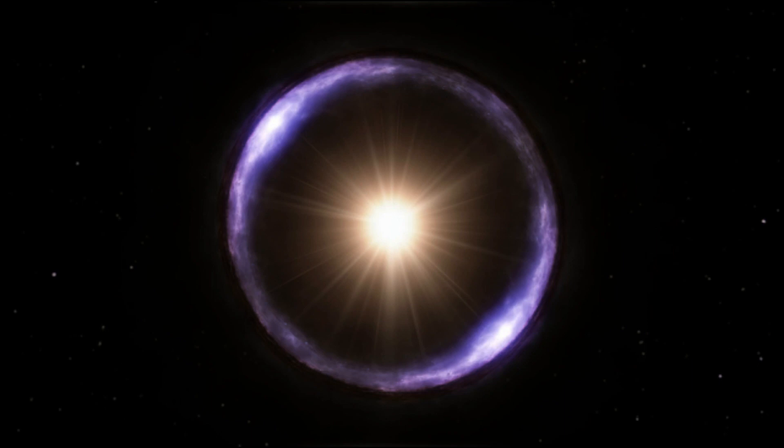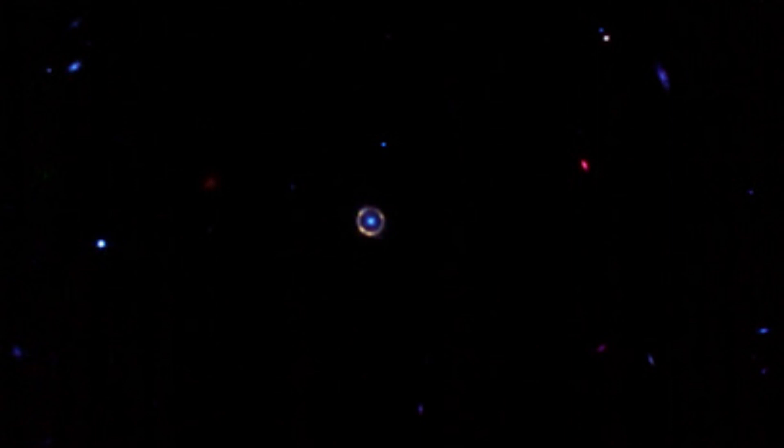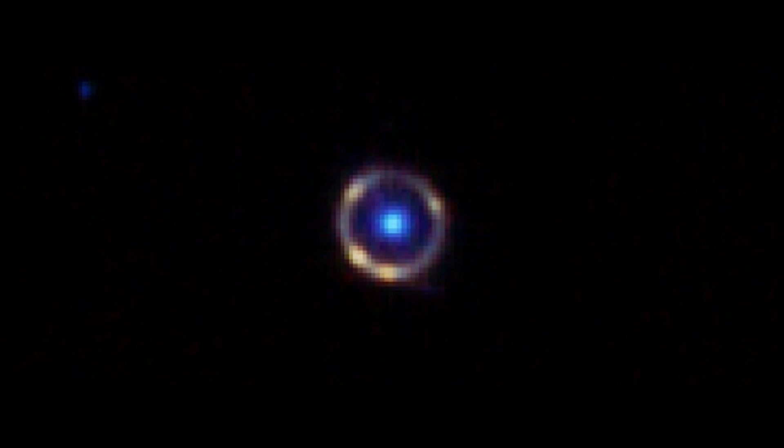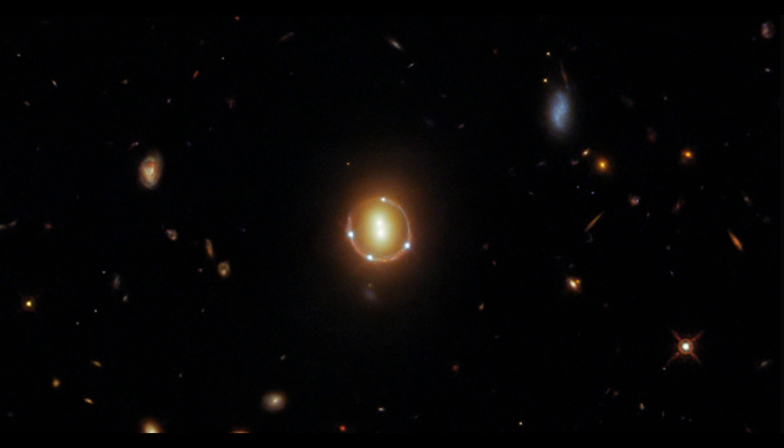James Webb Space Telescope has captured a perfect Einstein ring 12 billion light-years away. Since the initial James Webb Space Telescope photographs were released in July, our feeds have been inundated with breathtaking images of space,